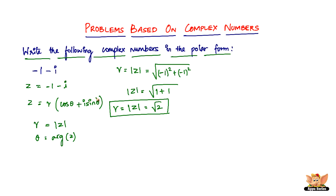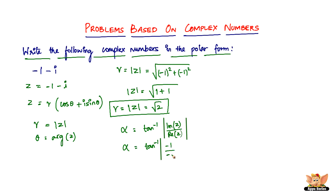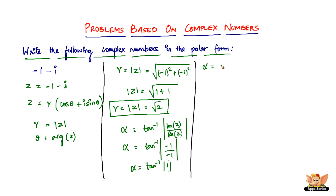Now all we have to do is find theta, which is the argument of the given complex number. To find the argument, we first find alpha: alpha equals tan inverse of the absolute value of the imaginary part divided by the real part. The imaginary part is minus 1 and so is the real part, giving us tan inverse of 1. Since tan of pi by 4 equals 1, alpha equals pi by 4.